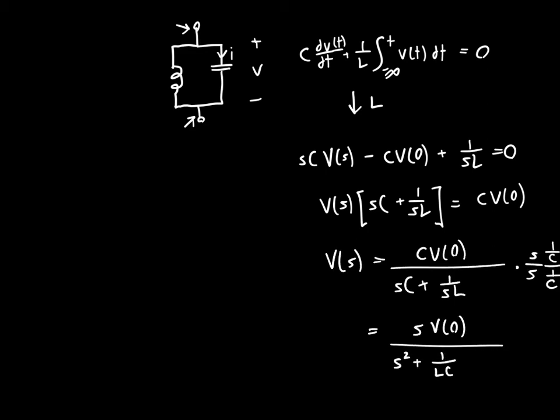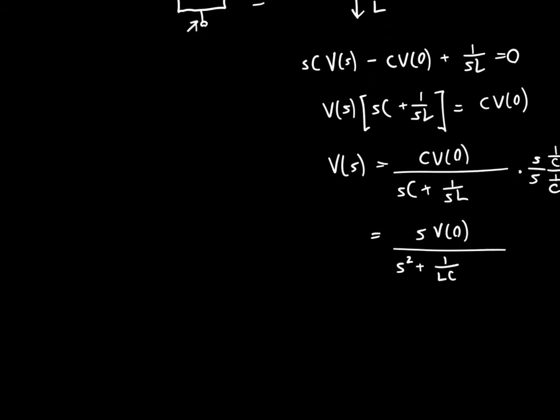You might recall that this 1 over LC term shows up a lot. We know 1 over square root of LC is just equal to ω₀, so 1 over LC is equal to ω₀². ω₀ is referred to as the resonant frequency of the circuit, and it's very common.